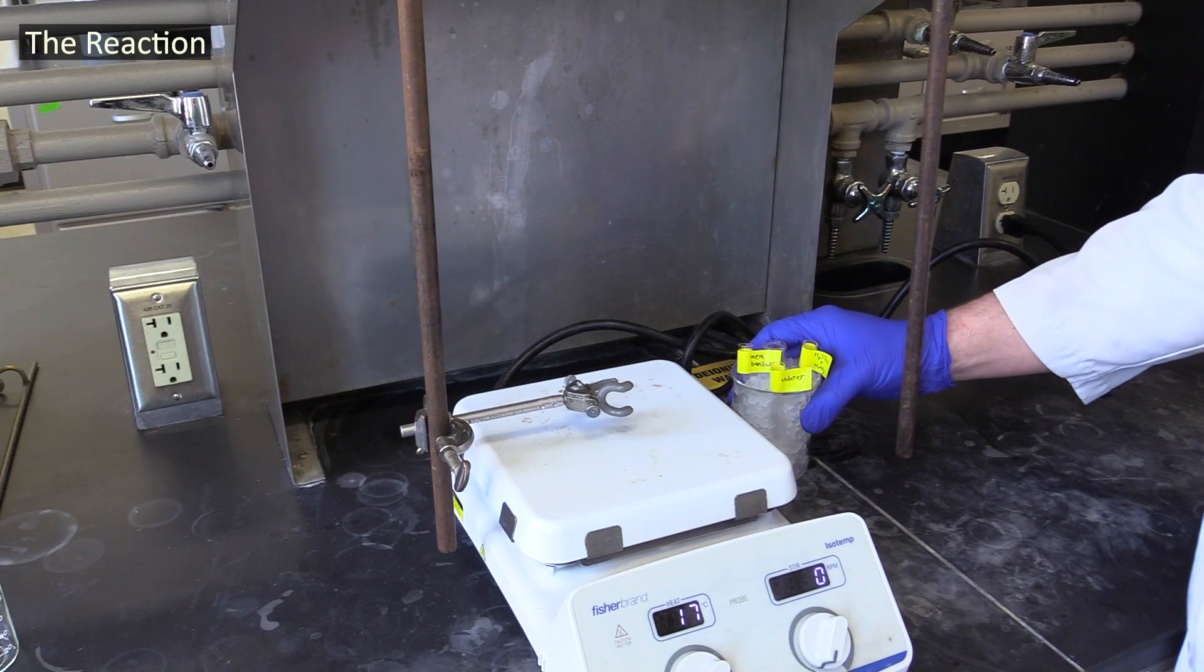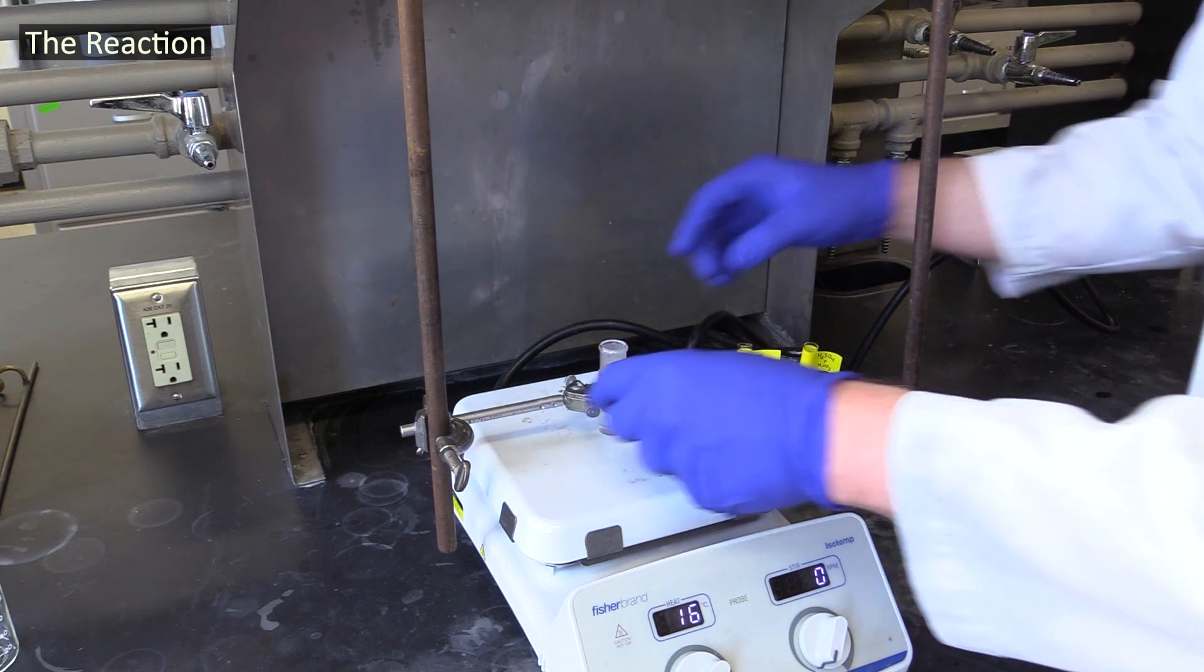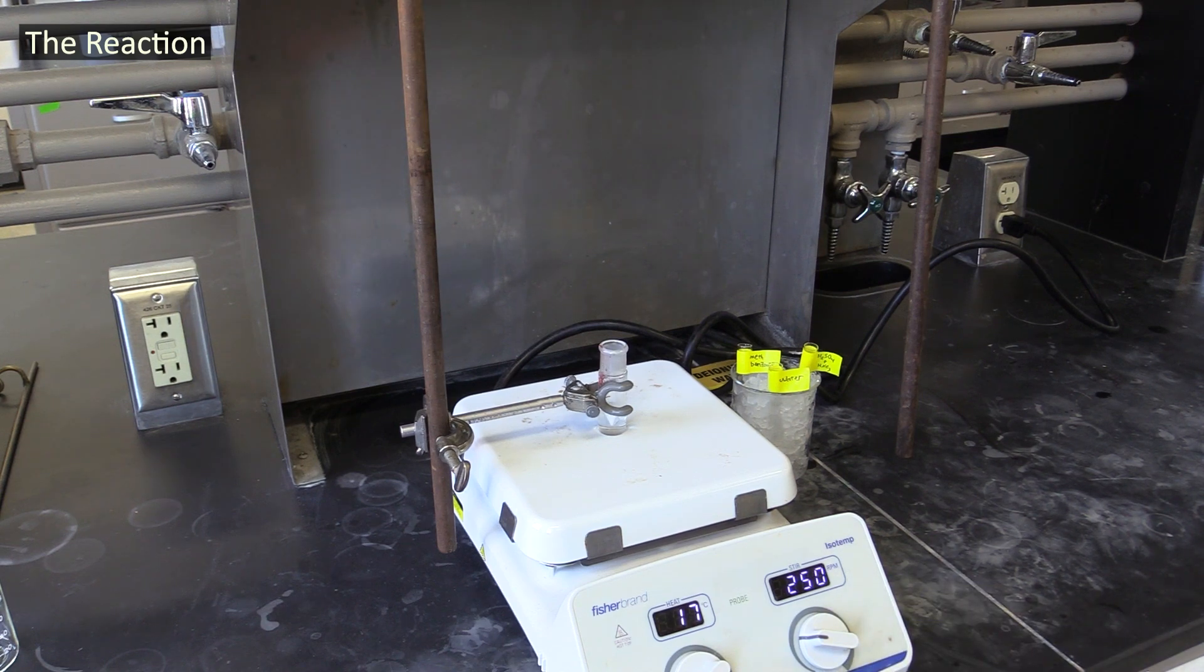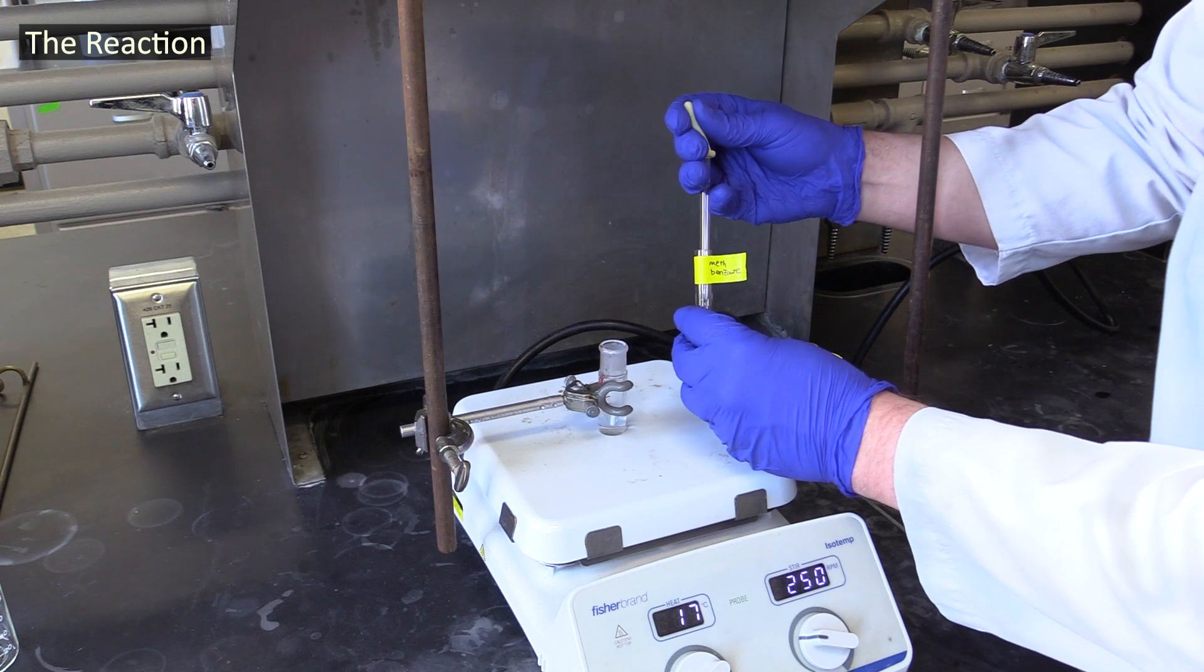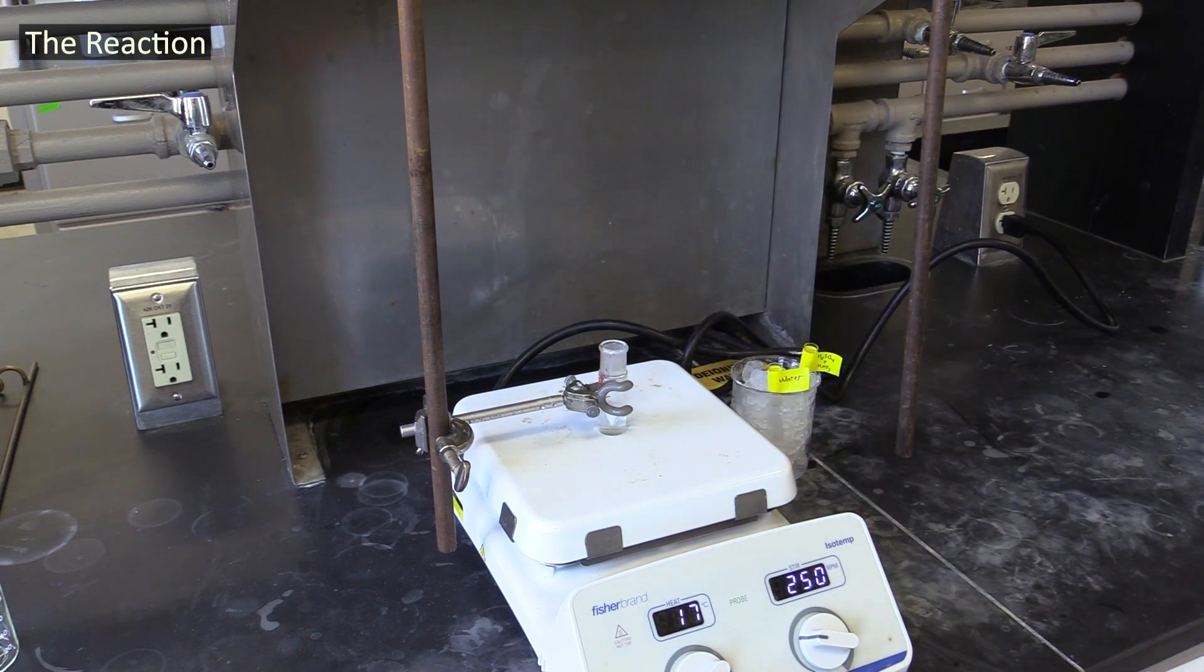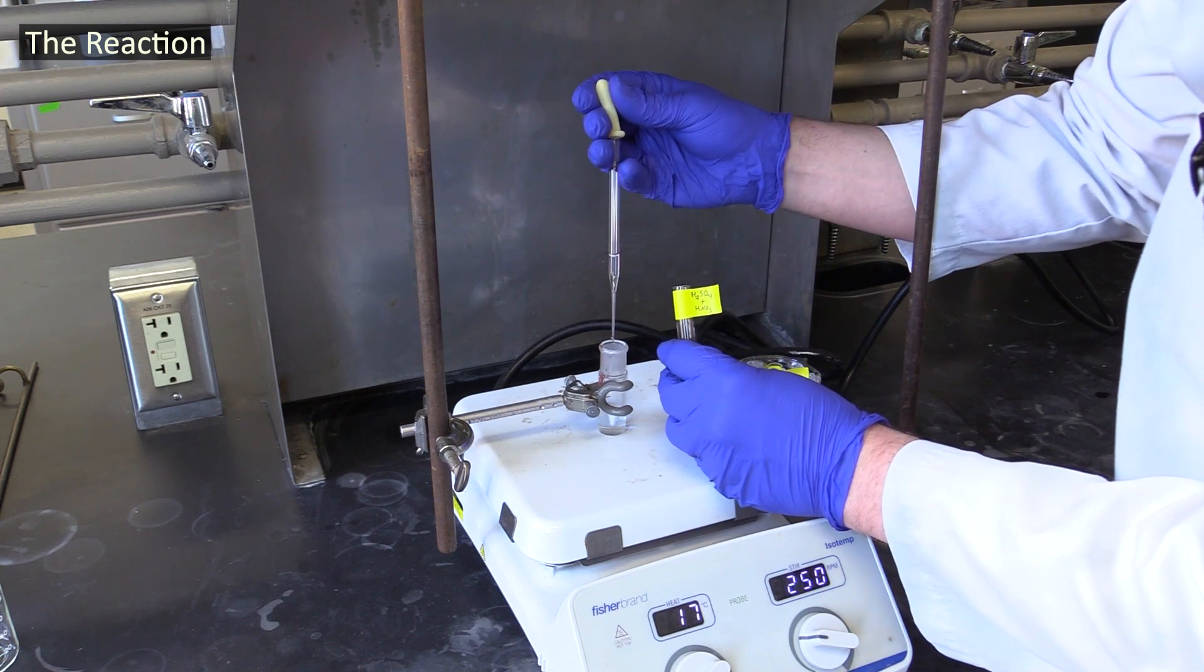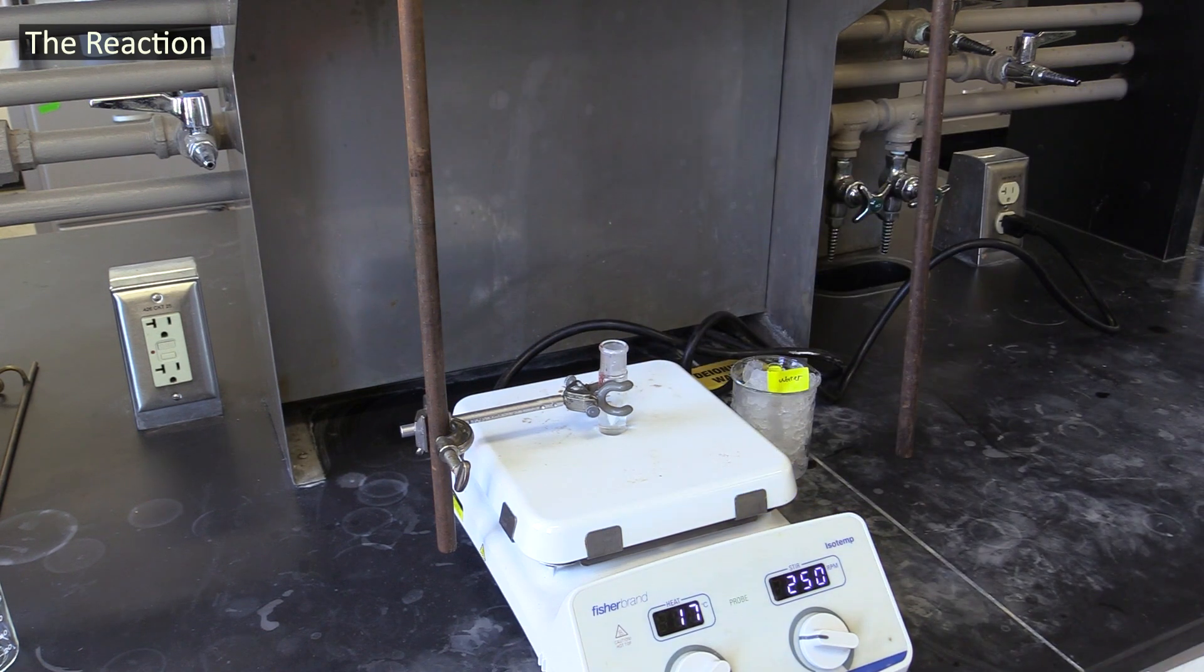After the vial with the sulfuric acid has had a chance to get good and cold, clamp it above your stir plate and set it to gently stir the solution. Use a Pasteur pipet to slowly transfer the methyl benzoate to this vial, and then, again working slowly, add your nitric and sulfuric acid mixture. After you've added all these things, let the solution stir for several minutes.